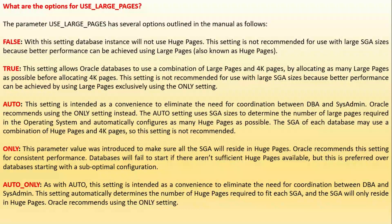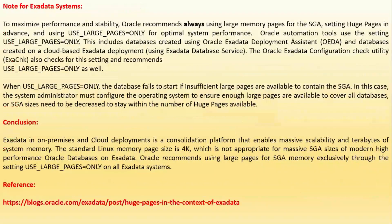AUTO_ONLY: as with AUTO, this setting is intended as a convenience to eliminate the need for coordination between the DBA and system admin. It automatically determines the number of huge pages required to fit each SGA, and the SGA will only reside in huge pages. Oracle recommends using the ONLY setting. For Exadata systems, to maximize performance and stability, Oracle recommends always using large memory pages for the SGA — setting huge pages in advance and using `use_large_pages = ONLY` for optimal system performance.